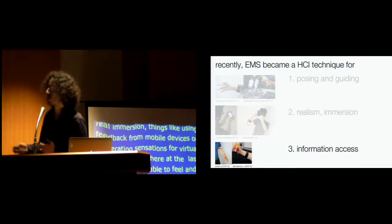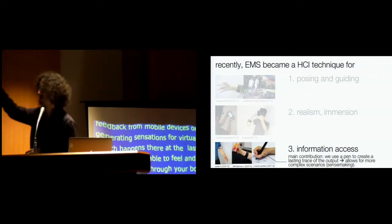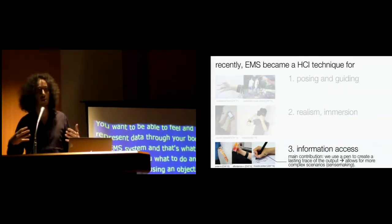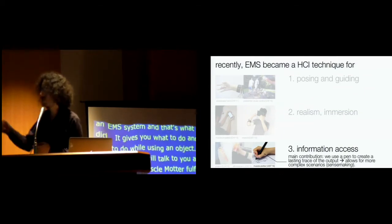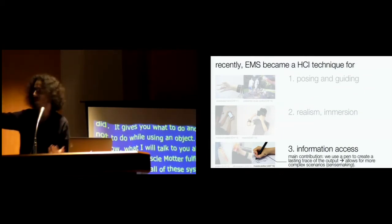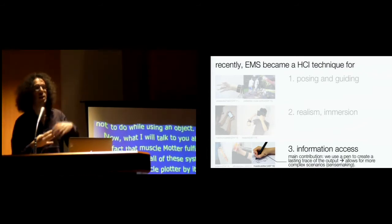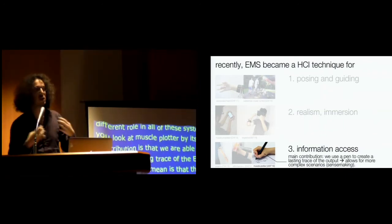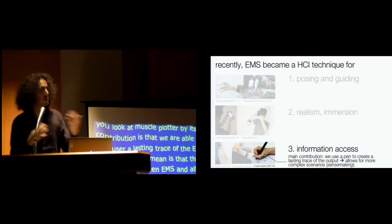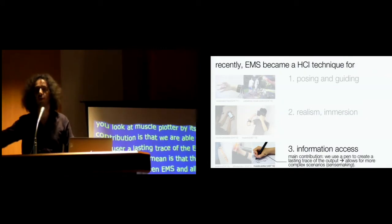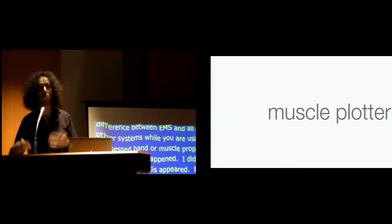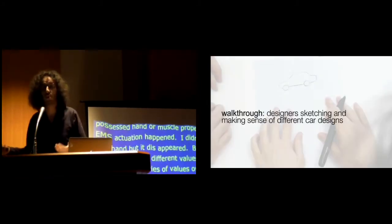And now kind of the last segment, and you can imagine that systems are getting mature as they develop into information access and they develop into longer applications, is to be able to feel and represent data through your body with an EMS system. And that's what Pose.io did, which is a system that allows you to perceive a series of values, or the same with the Fordance++, what to do's and what not to do's while using an object. Now, what I'm going to talk to you about is the fact that Muscleplotter fulfills a bit of a different role in all these systems. Because if you look at Muscleplotter by itself, the contribution here is that we're able to give the user a lasting trace of the EMS output.